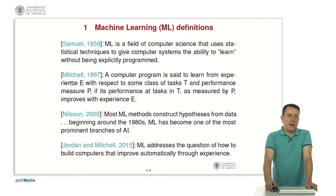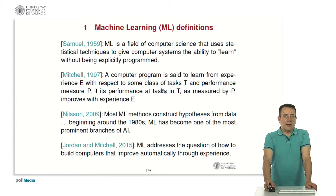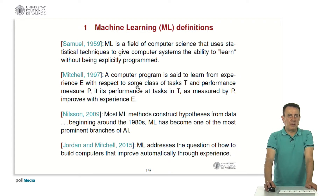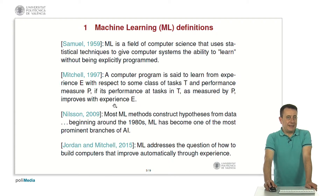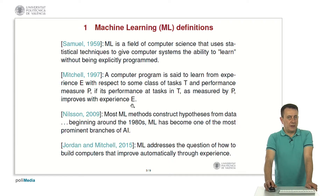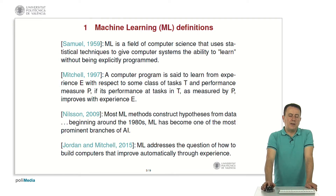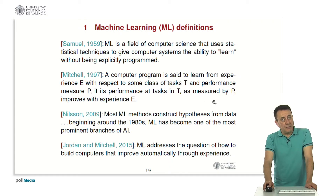In the mid-90s, we have a definition by Tom Mitchell, also a relevant machine learner. A computer program is said to learn from experience E with respect to some class of tasks T and performance measure P, if its performance at tasks in T as measured by P improves with experience E. What matters in this definition are the variables identified by Mitchell: a system that improves its performance from experience as measured by P on task T is said to be a machine learning system — one that learns automatically from data.